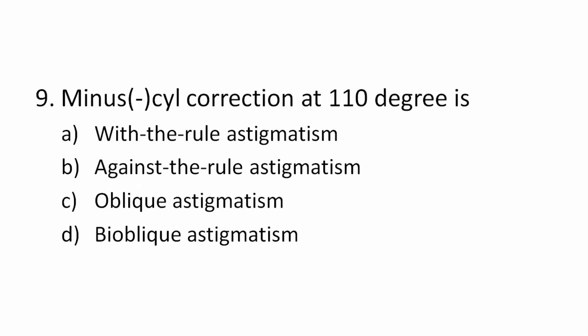Question 9: Minus cylinder correction at 110 degrees corresponds to which type of astigmatism? Options: with-the-rule, against-the-rule, oblique, or bioblique astigmatism. The correct answer is against-the-rule astigmatism. With a minus cylinder, 90 degrees plus or minus 30 degrees is against-the-rule. This means the horizontal meridian of the patient's cornea is steeper.